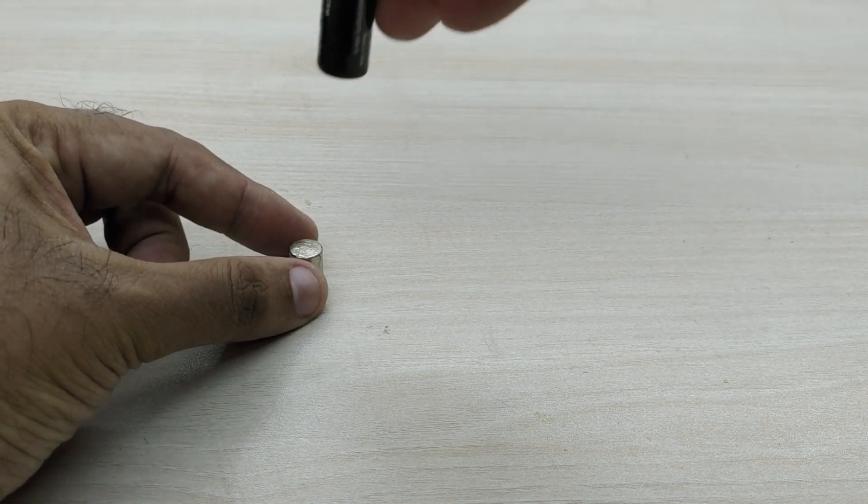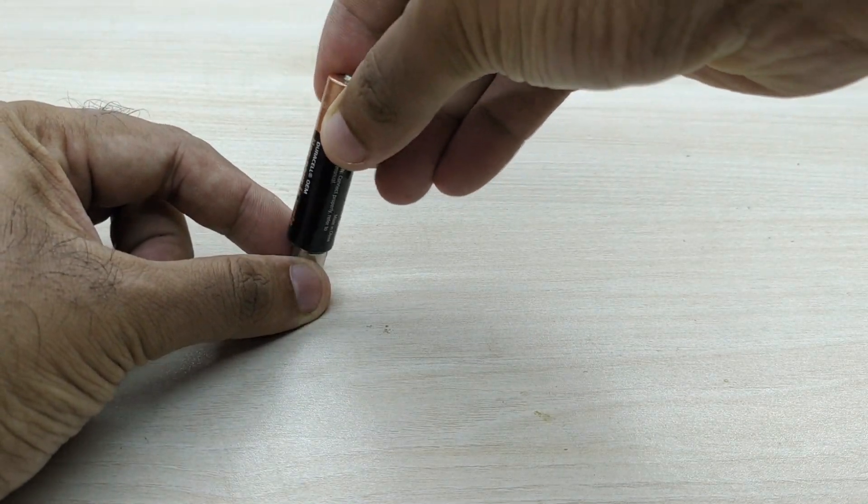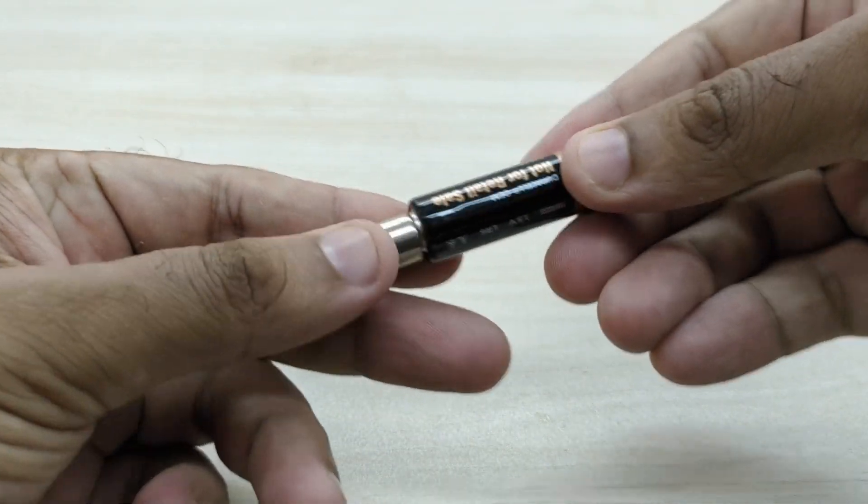First, take the magnet and keep the double A battery over it such that the negative terminal of the battery is in contact with the magnet.